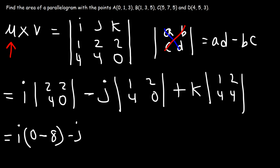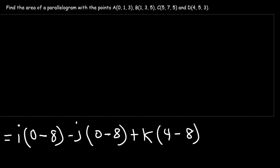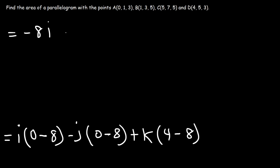And then we have minus j, 1 times 0 is 0, minus 2 times 4, which is 8. And then plus k, 1 times 4 is 4, minus 2 times 4, which is 8. So 0 minus 8, that gives us negative 8i. And then we have negative j times negative 8, so that's positive 8j. And 4 minus 8 is negative 4, so we have negative 4k. And so this is the cross product of vectors u and v.